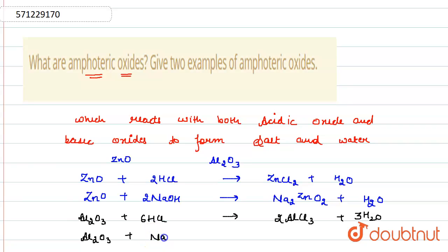Now Al2O3 reacts with a strong base like NaOH, then formation of NaAlO2 takes place plus water comes out.